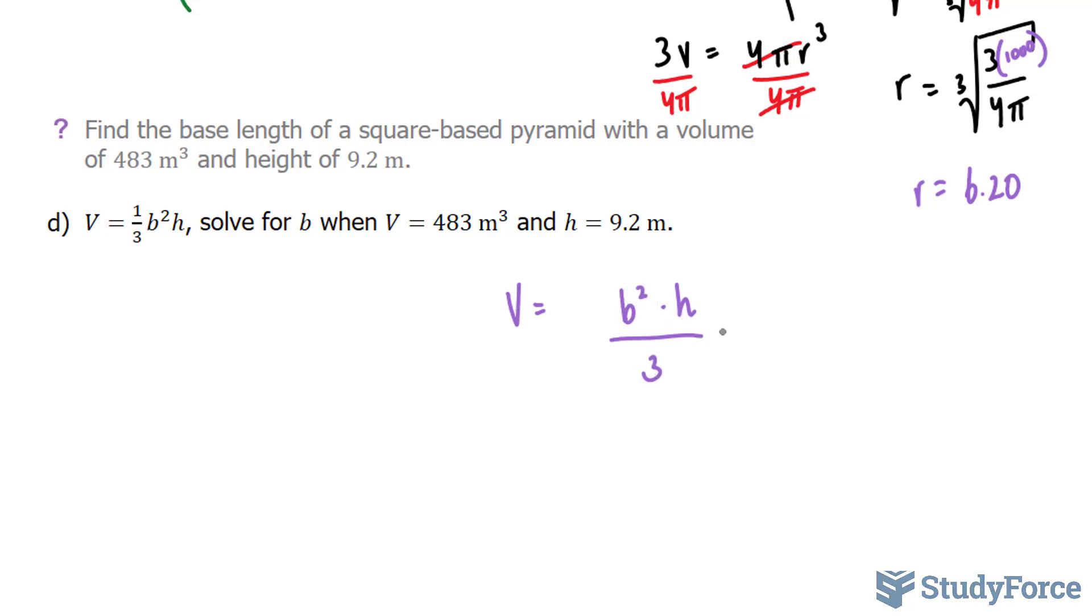I need to get rid of this 3. Multiply both sides by 3. I'm just using the same method as before. 3V is equal to B squared times H. Next, I'll divide both sides by H because I need to isolate for B. This cancels out, and I'm left with B squared is equal to the left side. And for our last step, we're going to square both sides. The square root of 3V over H is equal to B.